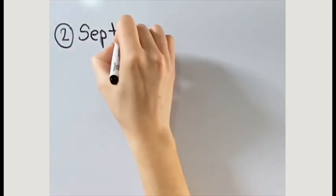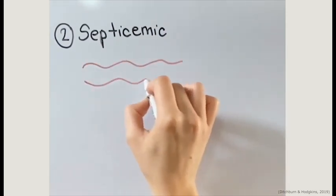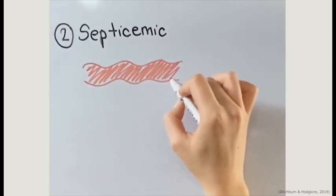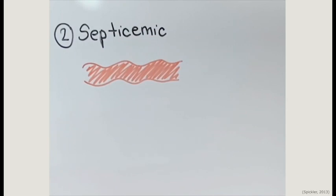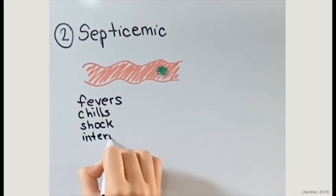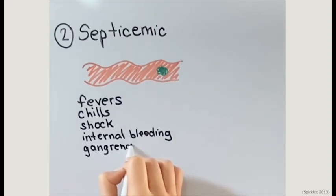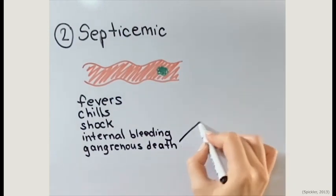The second type of plague is the septicemic plague and it infects the blood. This form typically develops as a progression of infection from bubonic plague. Symptoms associated with this form include fever, chills, shock, internal bleeding, and gangrenous death of peripheral regions such as the tip of the nose, toes, and fingers.